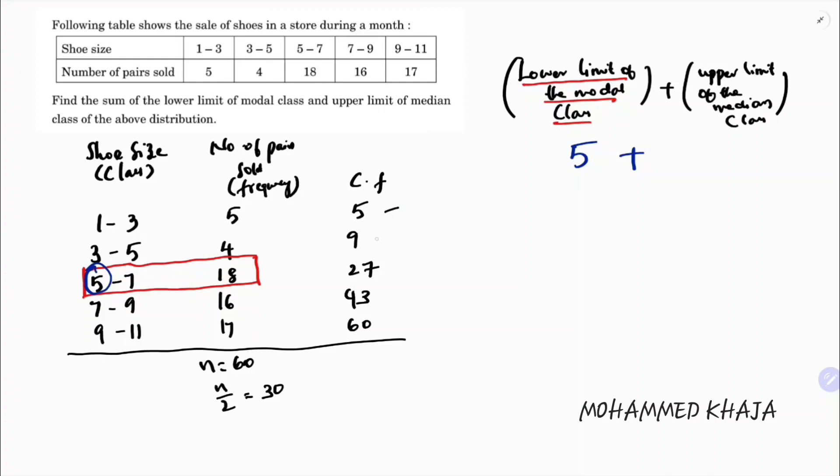The cumulative frequencies show the first class contains values 1 to 5, second up to 9, third up to 27, and the 30th value falls in the 7 to 9 class. Therefore, the median class is 7 to 9.